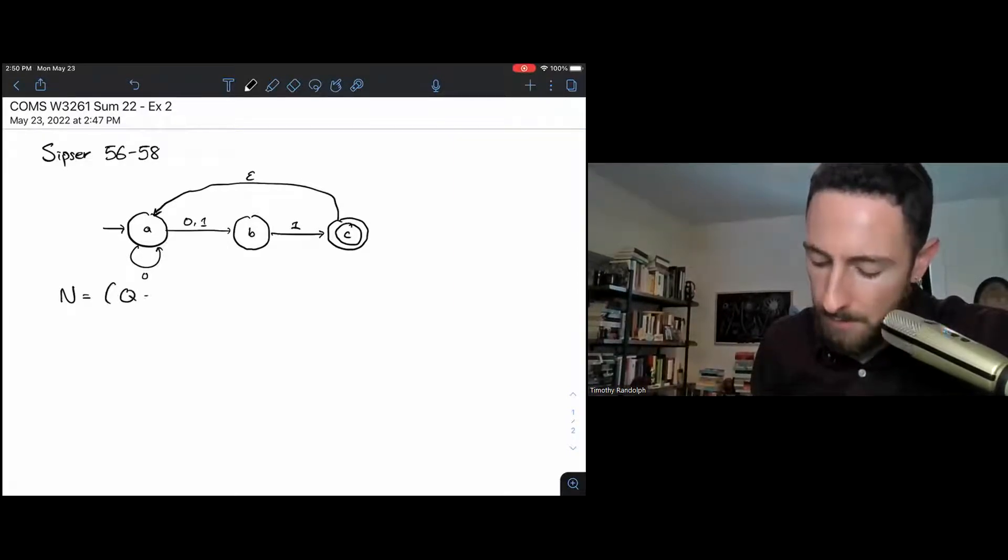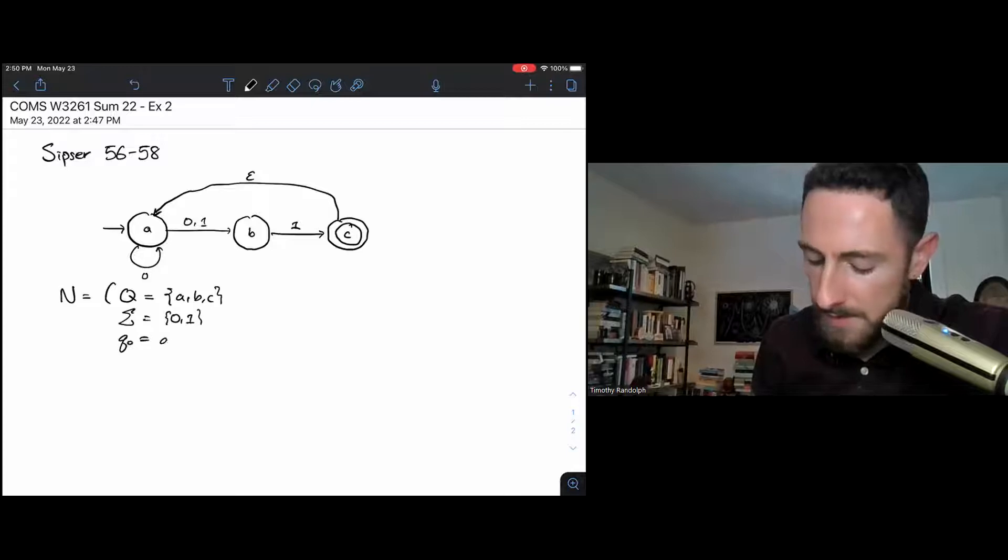So in particular, this NFA has a state set Q that contains A, B, and C, uses the alphabet 0, 1. The start state is A, the set of accept states is C and only C, and finally, the transition function delta.